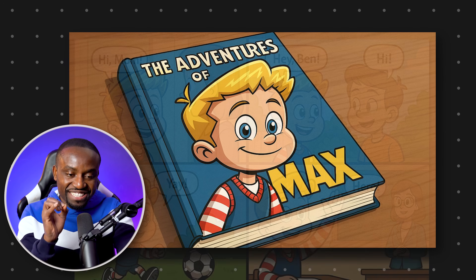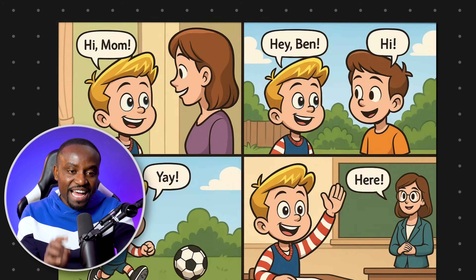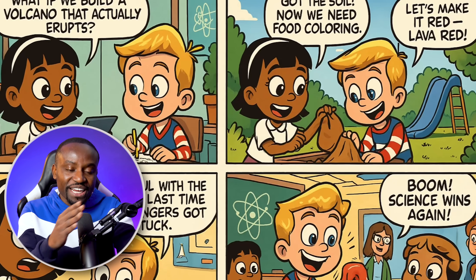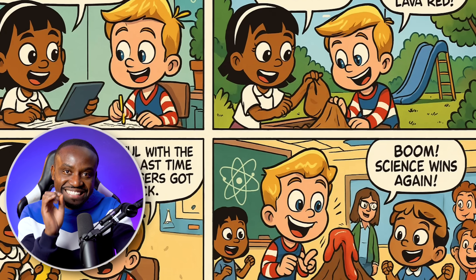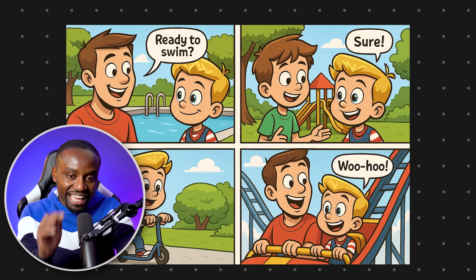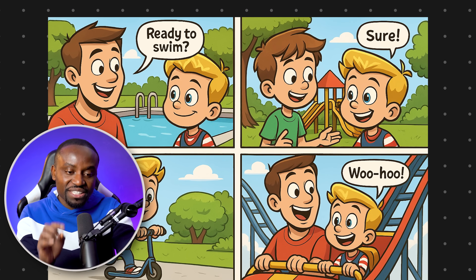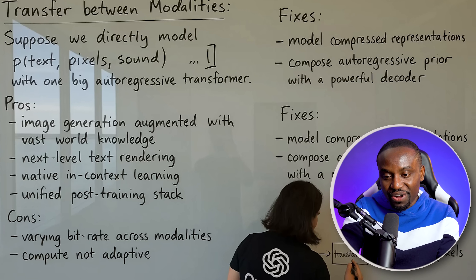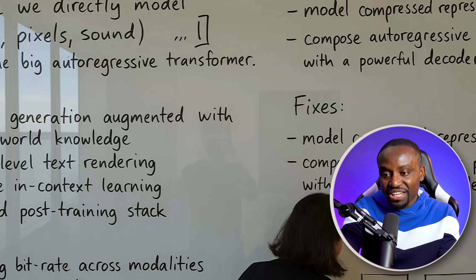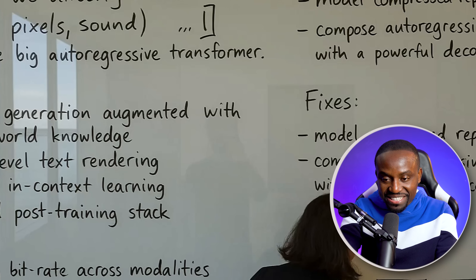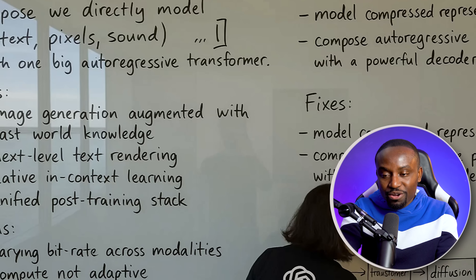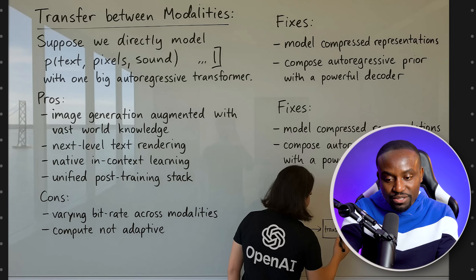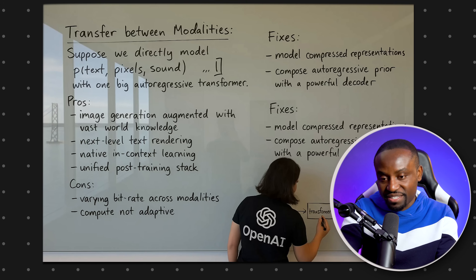Look at that. With just one source image, I'm able to create an entire comic book page with a consistent character and the exact text I want in each of the pages, spelled absolutely correctly. Look at the reflection of the photographer right there. Look at the Bay Bridge on the side and look at the text with the handwriting. Everything spelled correctly. This is absolutely insane.